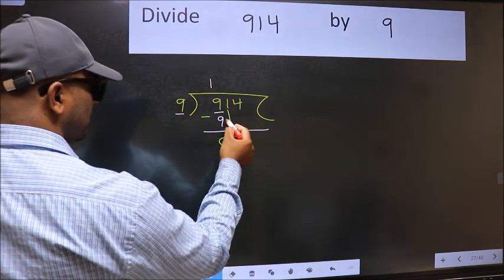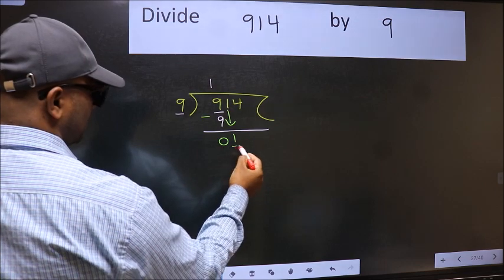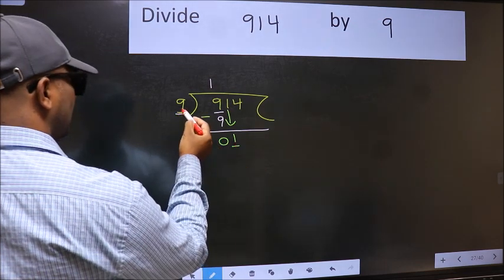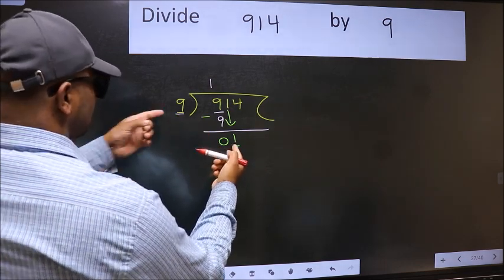After this bring down the beside number. 1 down. Now here we have 1 and here 9. 1 is smaller than 9.